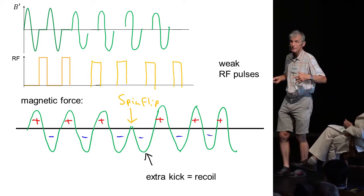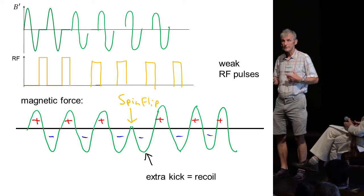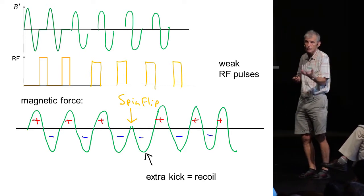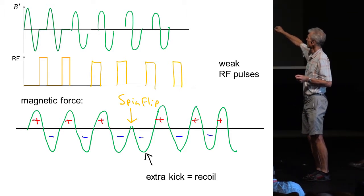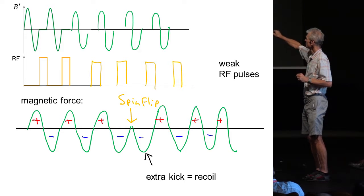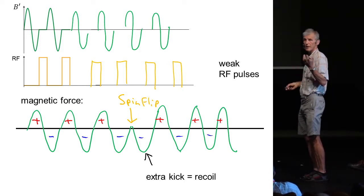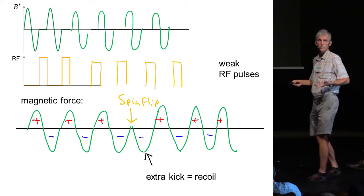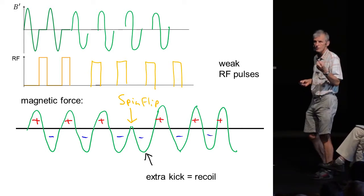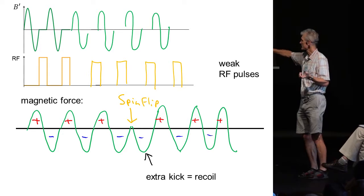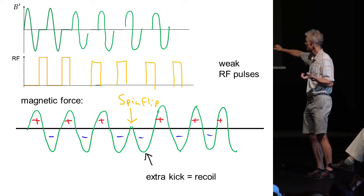But as I told you when you modulate something new can happen and the combination of those two processes can result in momentum transfer. Let's assume we have this oscillating magnetic force and in between we have some weak RF pulses. You can assume these are delta function pulses.